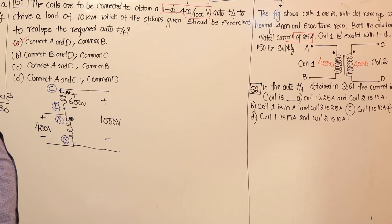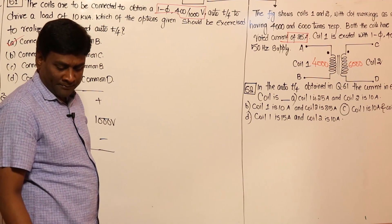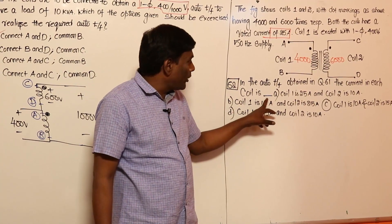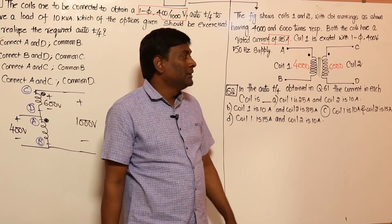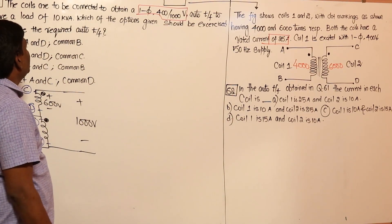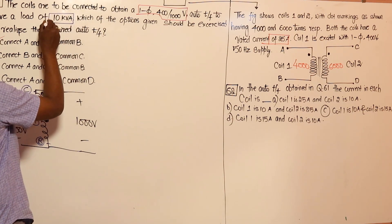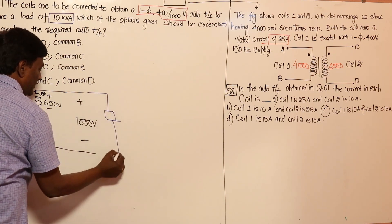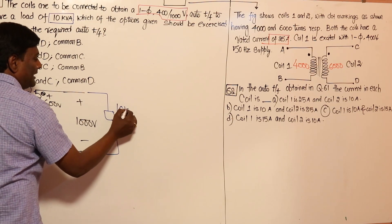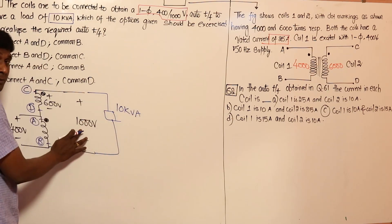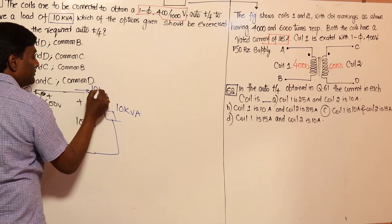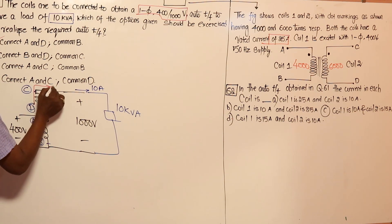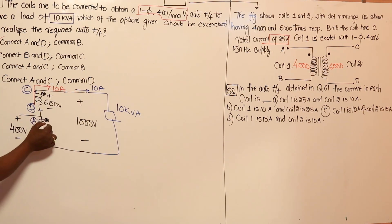Now the third problem: in the auto transformer obtained in the previous question, find the current in each coil. A 10,000 VA (10 kVA) load is connected to the output. The load is at 1000 volts, so the current flowing to the load is 10,000 divided by 1000, which equals 10 amperes. This 10 ampere current comes out of the dot terminal.